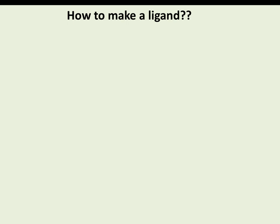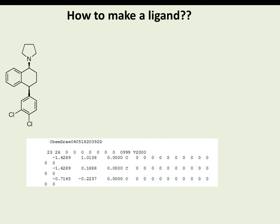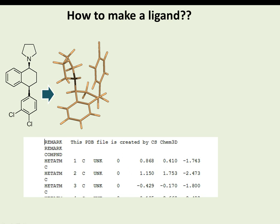Many softwares are available for ligand preparation, each with unique protocols. For example, in ChemDraw, you first draw the two-dimensional structure. When saved as a .mol or similar format, only x and y coordinates are present. When converted to three dimensions and saved in PDB format, atom assignments with x, y, z coordinates are generated.